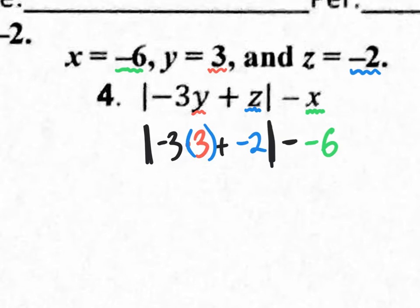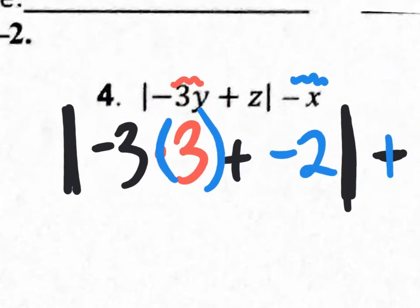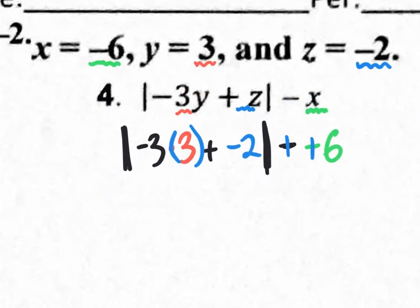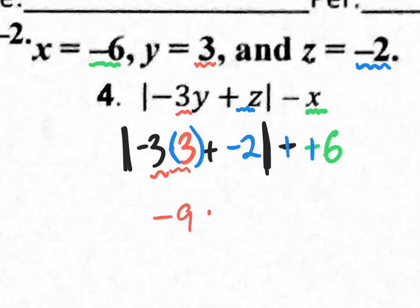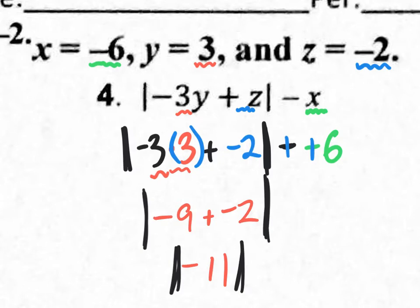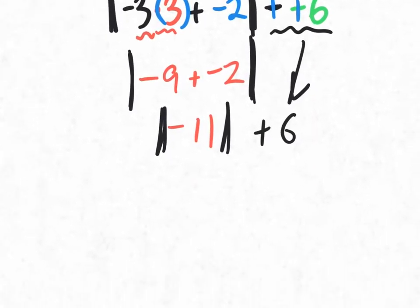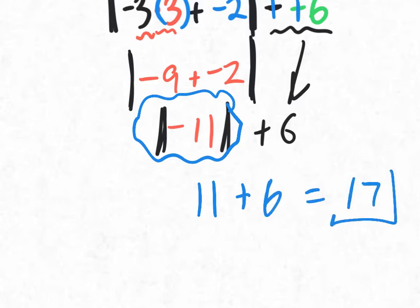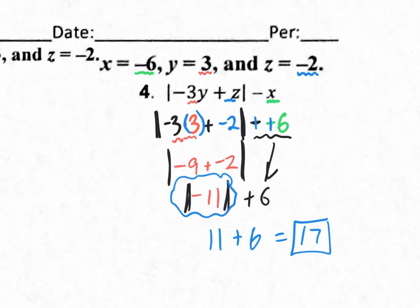Again, the minus minus must change to a plus plus where that 6 was. Inside the absolute value, negative 3 times 3 is negative 9, plus negative 2 gives negative 11. Bring down the plus 6. The absolute value of negative 11 is 11, and 11 plus 6 is 17. That is your final answer for number 4.